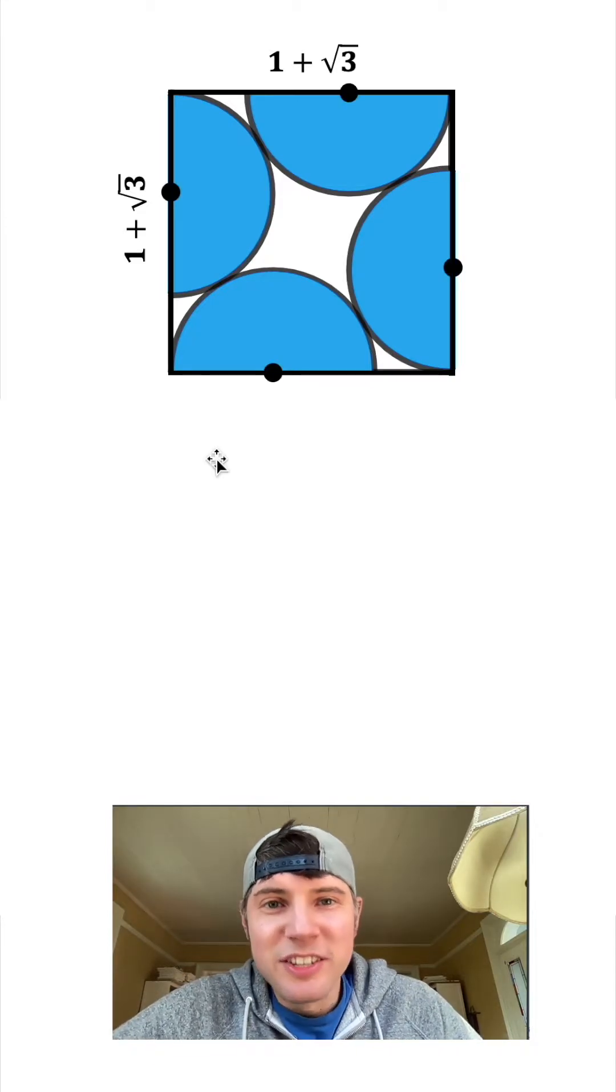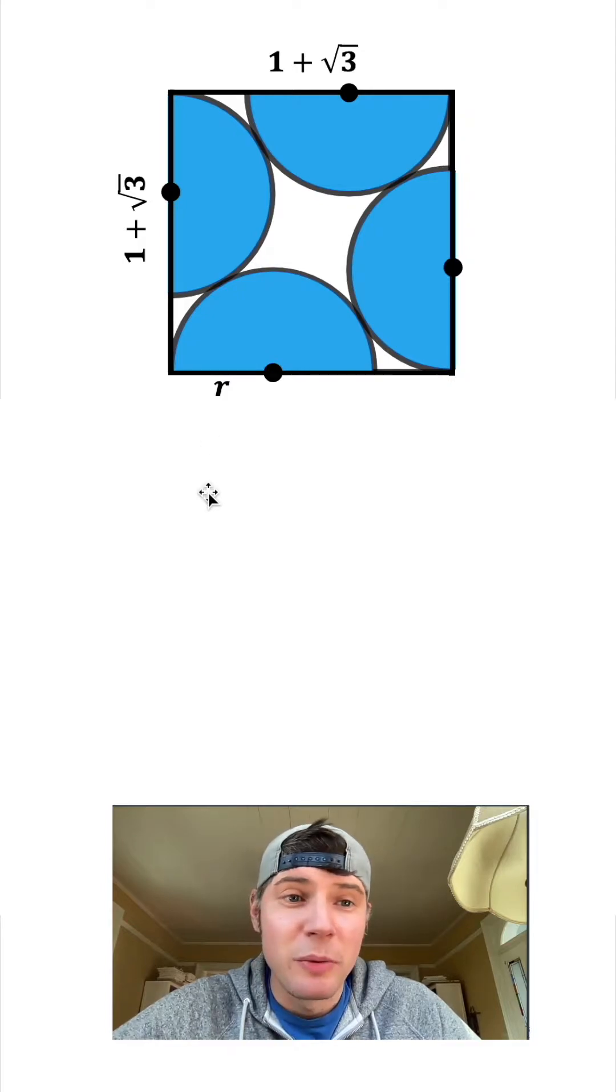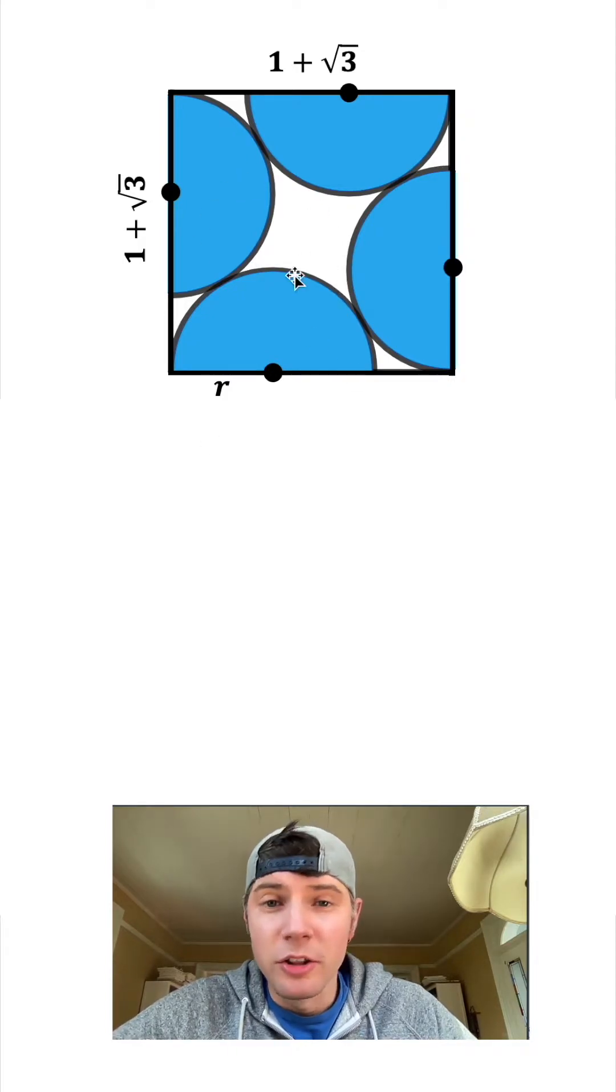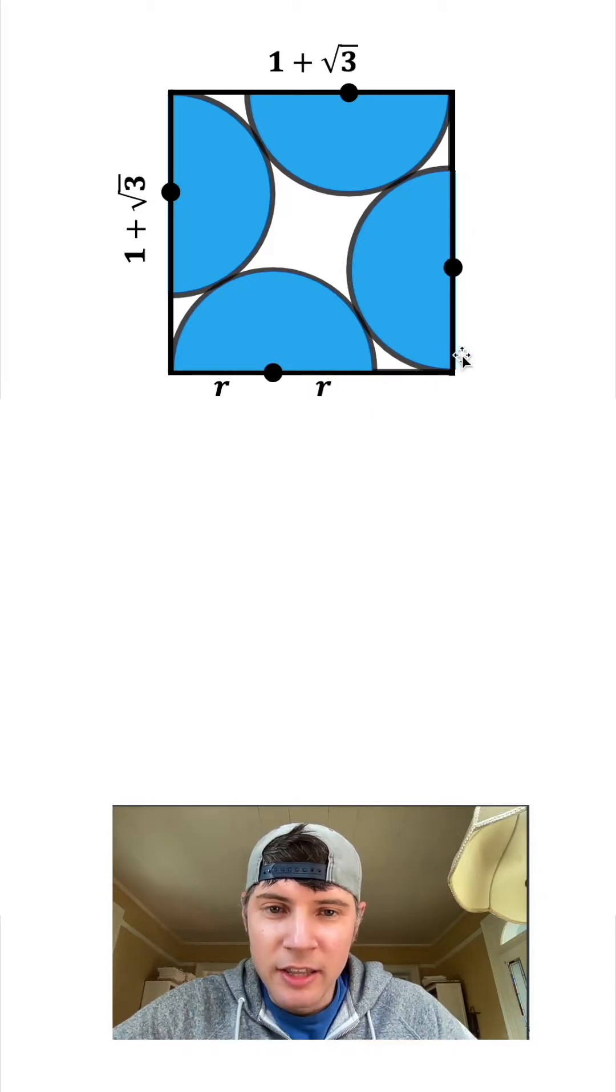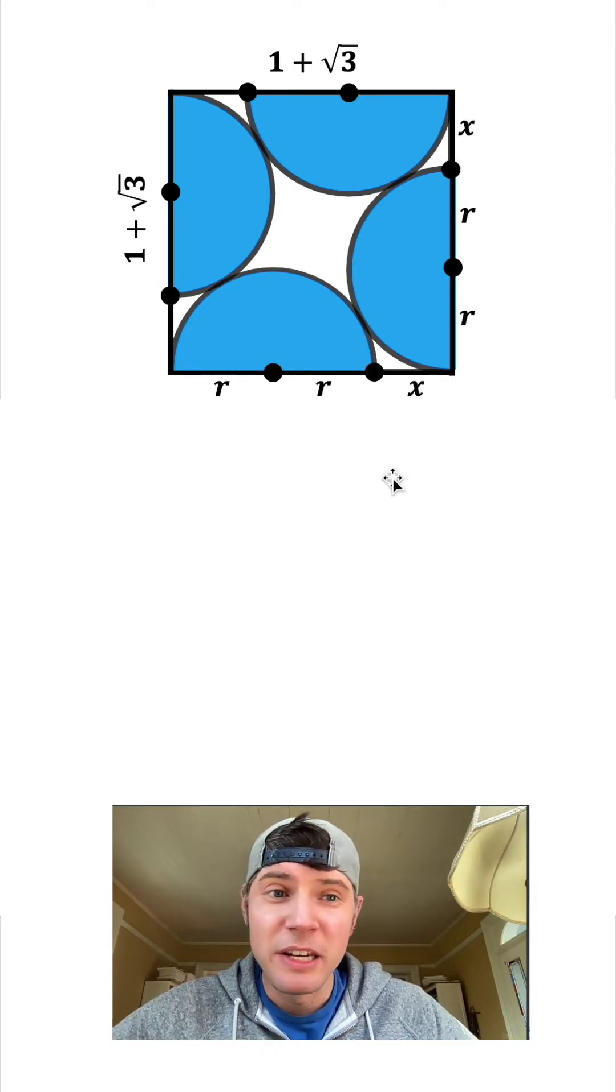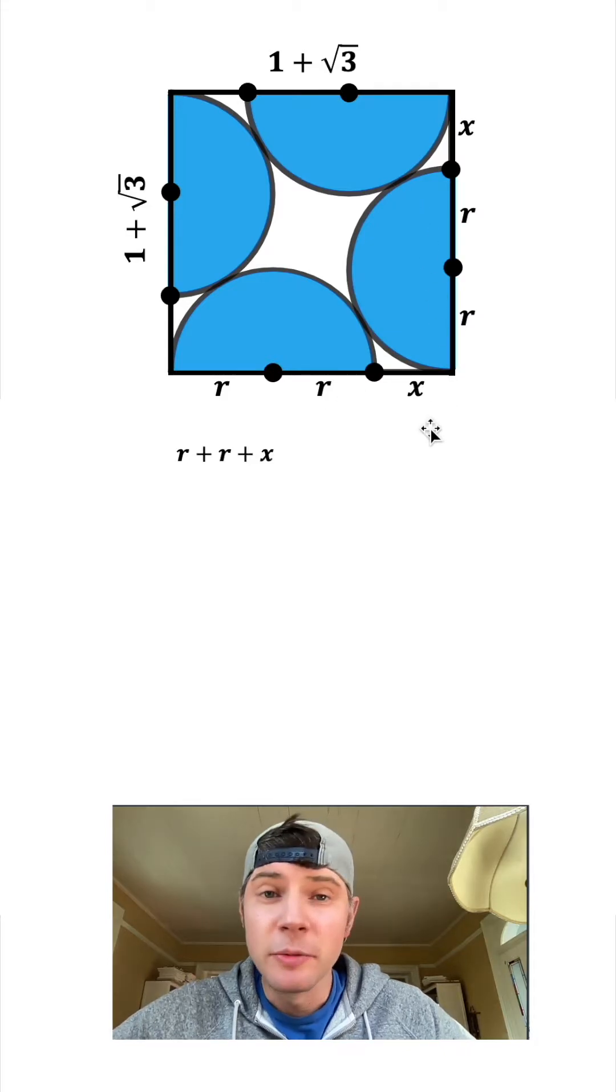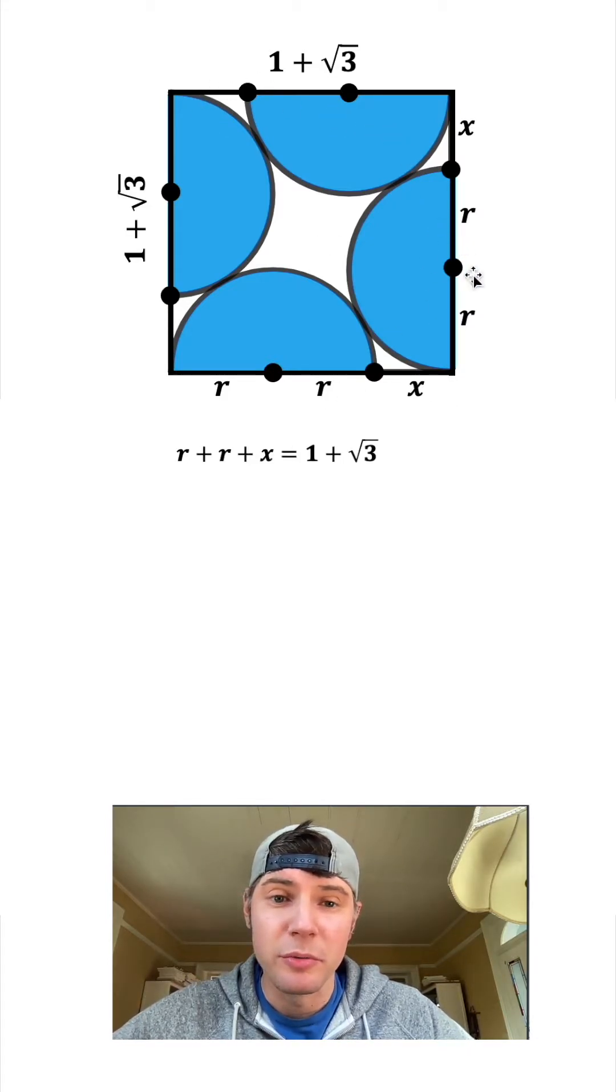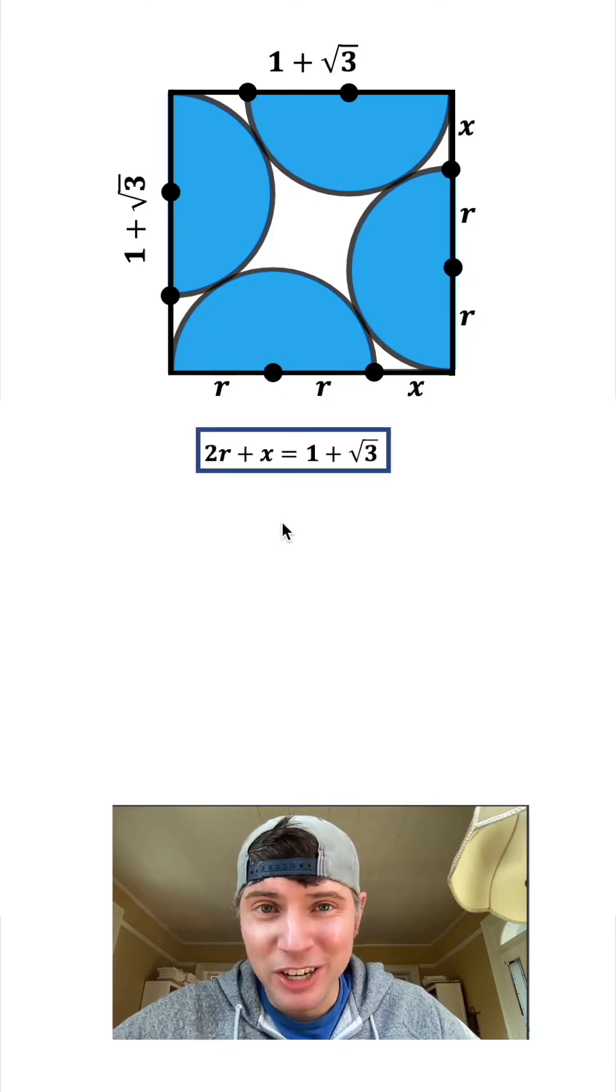So how are we going to solve this? Let's find the center of each circle and name this piece R because that represents the radius. All the circles are congruent so they have the same radius. This piece will also be R, and these two will be R, and this last piece we'll call X. Since it's a square, R plus R plus X equals 1 plus square root of 3, which simplifies to 2R plus X equals 1 plus square root of 3.